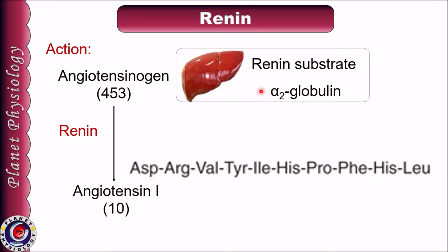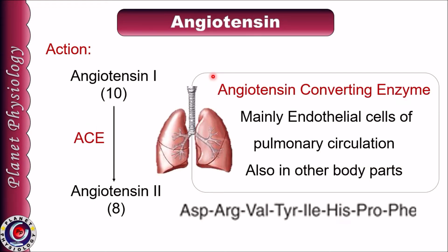Angiotensinogen is an alpha-2 globulin secreted from the liver. It has 453 amino acids and is also called the renin substrate. Angiotensin 1 is a decapeptide and acts as substrate to form angiotensin 2. Angiotensin converting enzyme, abbreviated as ACE, is mainly found in endothelial cells of pulmonary blood vessels. It splits two amino acids from angiotensin 1 and converts it to the octapeptide angiotensin 2. ACE is also found in other body parts in small quantities.